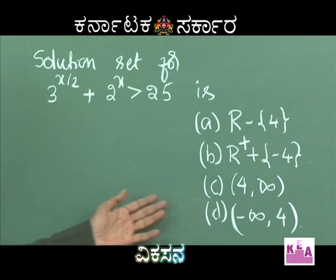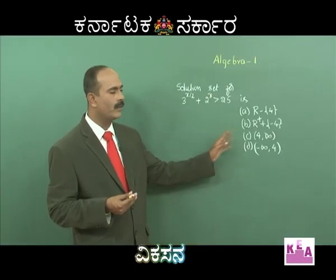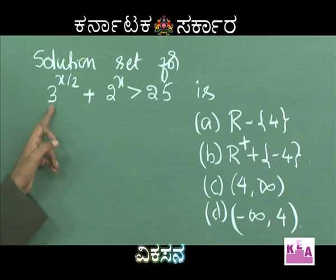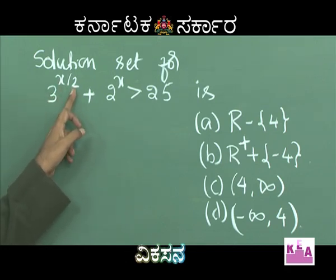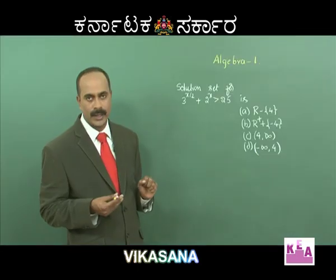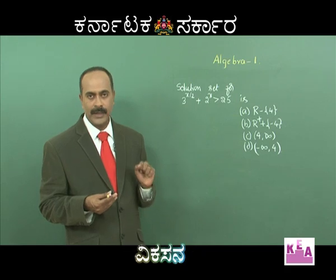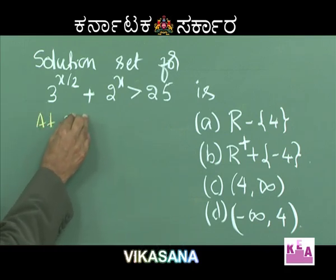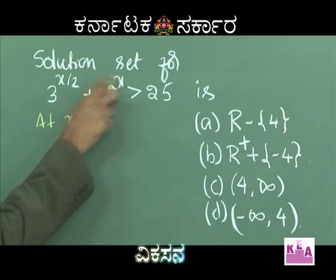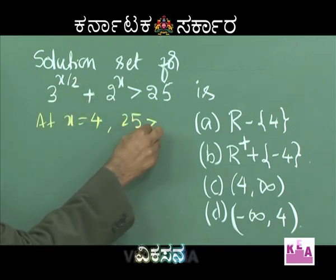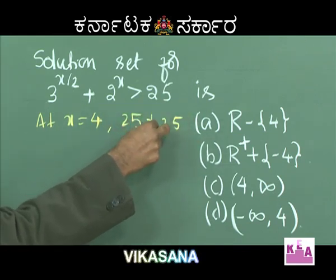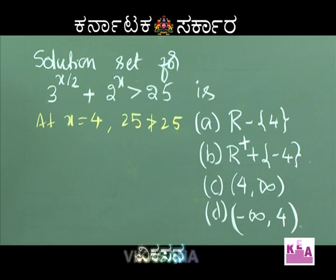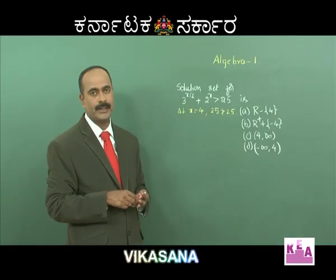First, check whether 4 should be included or excluded by substituting x = 4. We get 3^(4/2) + 2^4 = 3² + 16 = 9 + 16 = 25. But 25 is not strictly greater than 25, so x = 4 gives LHS = RHS. The inequality is strict, so 4 is not included — it is a boundary value.